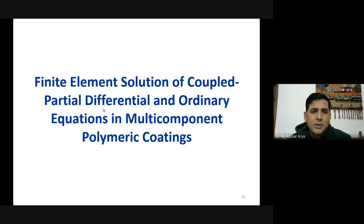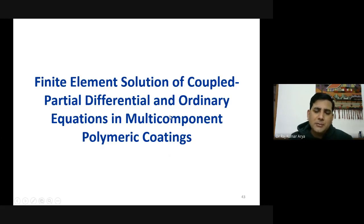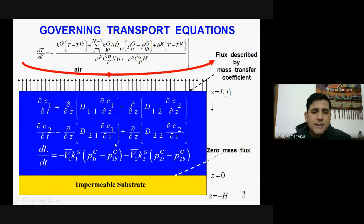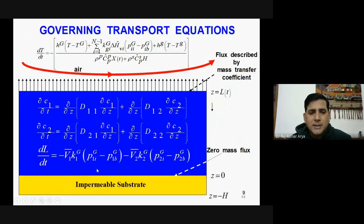Having covered double integration and various solution techniques, let's talk about the finite element solution of coupled partial differential and ordinary equations in multi-component polymeric coatings. I have taken this as an example — you can choose any one. Practically, what you have is a coating on a substrate. The substrate could be impermeable or permeable; for metals it is not permeable, but for brick it can absorb. We are considering the impermeable case.